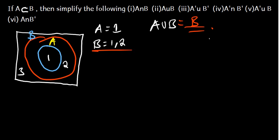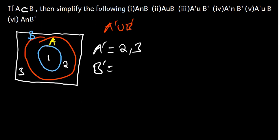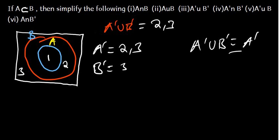Let's go to Part 3. We have A complement union B complement. Now we are going first to list the elements of A complement. A complement is just 2 and 3 — we are excluding the 1. What about B complement? B complement is only 3, since 1 and 2 are in B. If we add the numbers together, we get 2 and 3. But 2 and 3 is the same as A complement. So, A complement union B complement is just basically A complement.